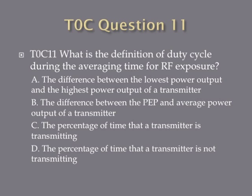Question eleven. What is the definition of duty cycle during the averaging time for RF exposure? A, the difference between the lowest power output and the highest power output of a transmitter. B, the difference between the PEP and average power output of a transmitter. C, the percentage of time that a transmitter is transmitting. Or D, the percentage of time that a transmitter is not transmitting?